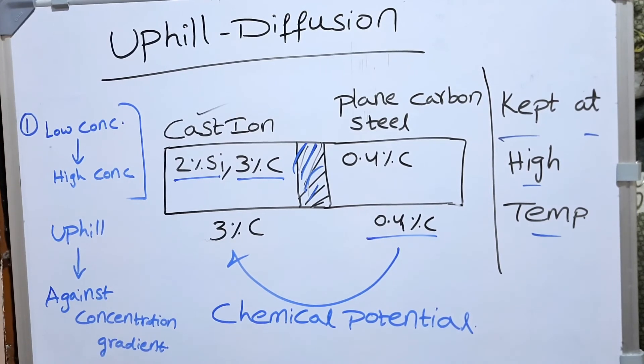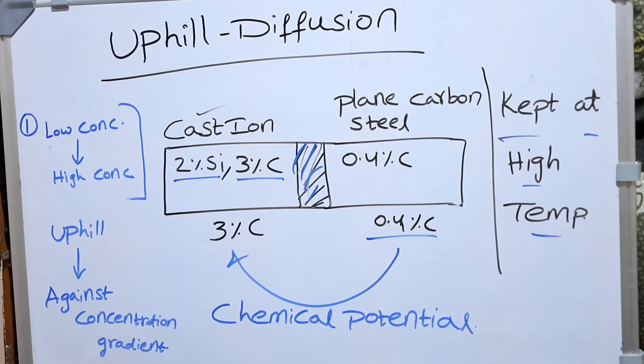So here what we need to understand is, if we can by some way decrease the activity, it doesn't matter what is the concentration of that element. If we can decrease the activity of that element, then the diffusion automatically happens from the low concentration to the high concentration.